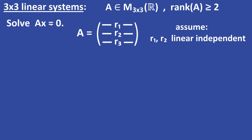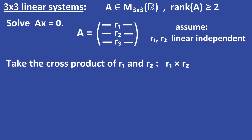We want to find the solutions x of that system. The 3x3 matrix A has rows R1, R2, and R3. We assume that rows R1 and R2 are linearly independent. If this is not the case, you can interchange the rows of the matrix A until the first two rows are linearly independent. Permuting the rows doesn't change the solution of the system.